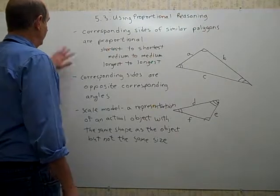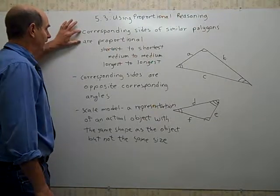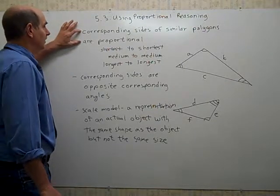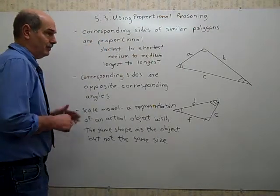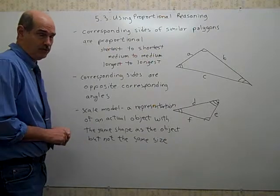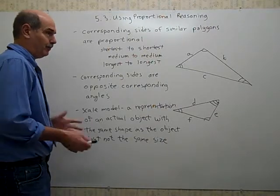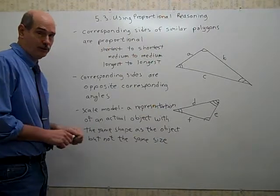There's a theorem that says corresponding sides of similar polygons are proportional. Similar polygons are shapes that have the same shape, but not necessarily the same size. They can have the same size, but usually they don't. If they have the same shape and size, they're called congruent.